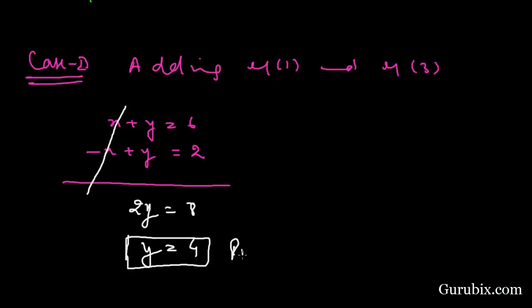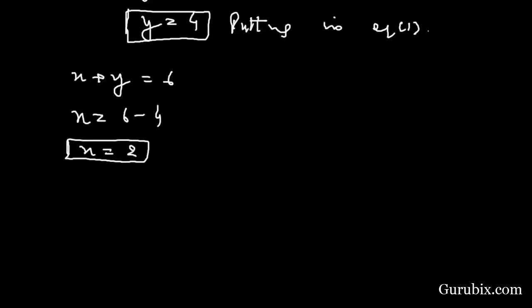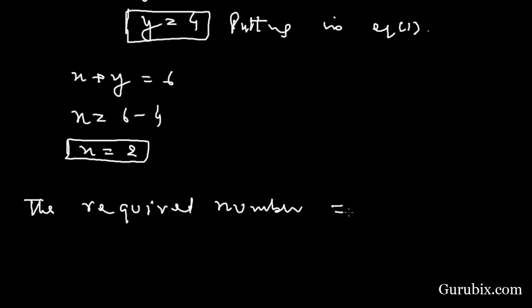We put the value of Y equals 4 into equation number 1: X plus Y equals 6, so X equals 6 minus 4, which means X equals 2. In this condition, the required number is 42.